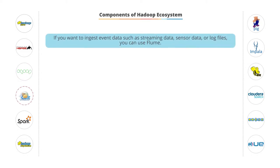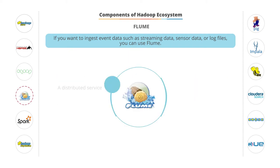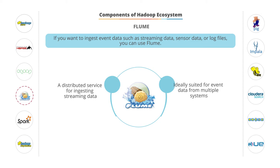As the increased amount of streaming data is becoming more useful, we will want to ingest that type of data as well, which includes streaming data, sensor data, or log files. For all of these types of data, you can use Flume. Flume is a distributed service that collects event data and then transfers it to HDFS. It is ideally suited for event data from multiple systems.